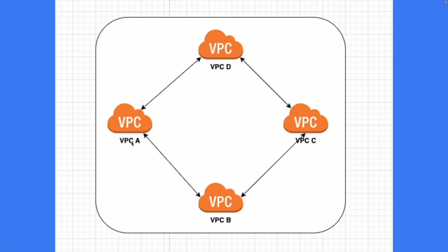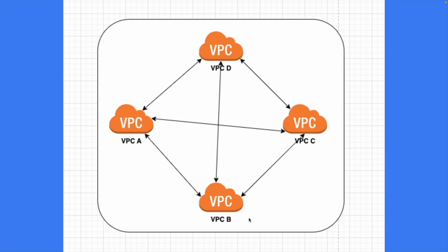VPC peering is not transitive in nature. So VPC A cannot communicate with VPC C because there is no direct connection between them — it cannot go via VPC B to VPC C. In order to establish a network connection you have to have a direct connection between the VPCs. So to enable full connectivity, we need to add more peering connections, such as VPC A to VPC C and VPC B to VPC D.